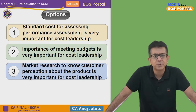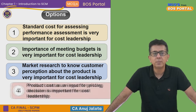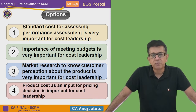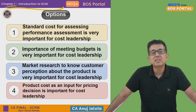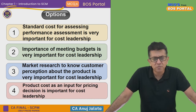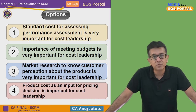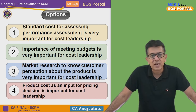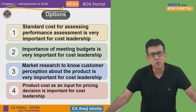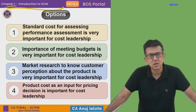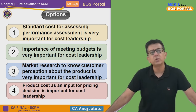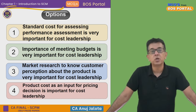Third option: market research to know customer perception about the product is very important for cost leadership — I'll come back to this. Fourth option: product cost as an input for pricing decisions is important for cost leadership. Obviously your selling price will be based on cost, so knowing your product cost is super important. Unless you know that, how will you decide your selling price? First, second, and fourth are correct.